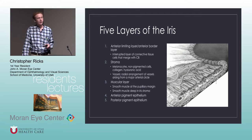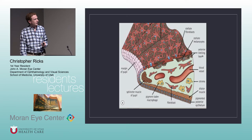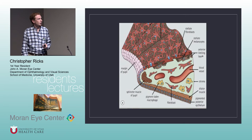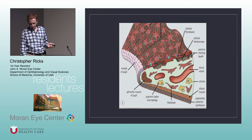Then the muscular layer — there's the smooth muscle at the pupillary margin and the smooth muscle deep in the iris stroma. You have the anterior pigment epithelium and the posterior pigment epithelium. Here's a cartoon version of this, showing the anterior border, the stroma with all blood vessels, and then the muscles and the posterior pigmented area.